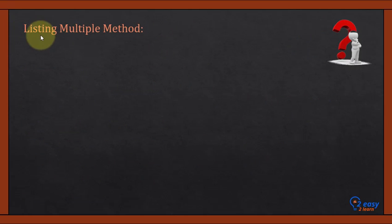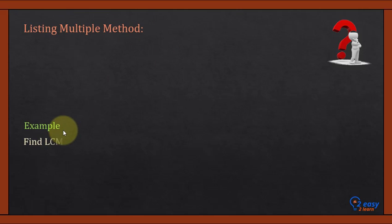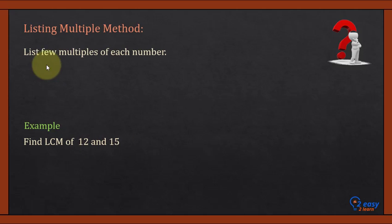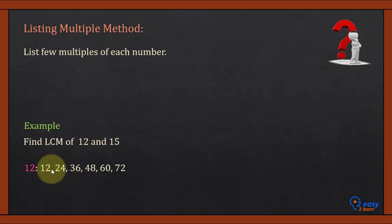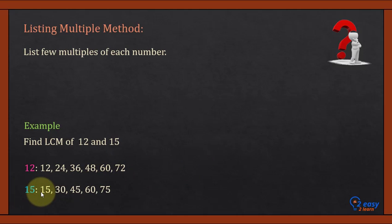Listing multiples method: for example, we want to calculate the LCM of 12 and 15. List a few multiples of each number. Multiples of 12: 12, 24, 36, 48, 60, 72, and so on. Multiples of 15: 15, 30, 45, 60, 75, and so on.